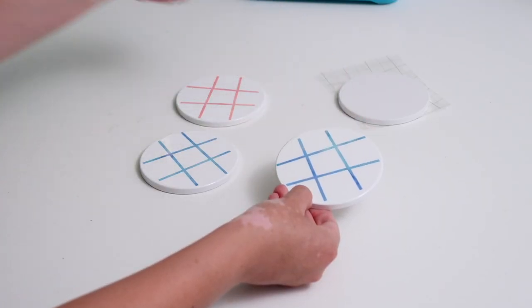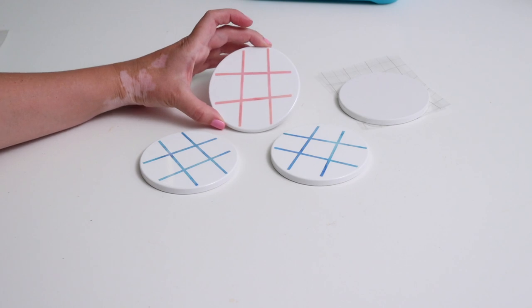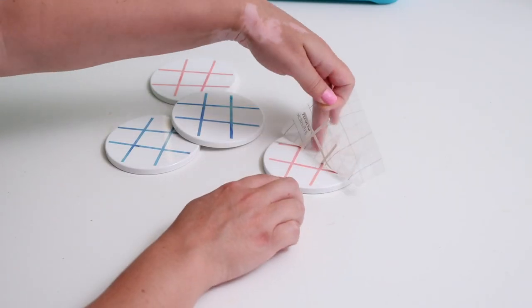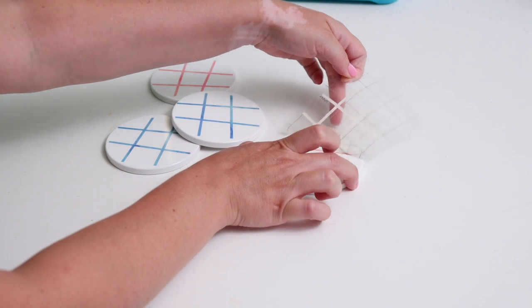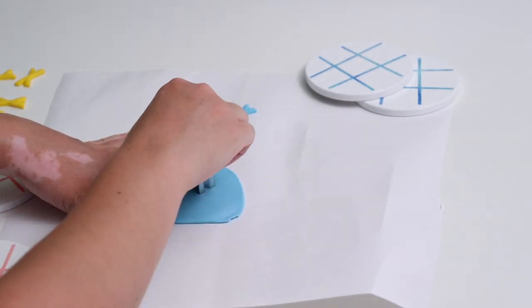And look at how vibrant that is! This is part of the coaster now. It's waterproof, it will not come off at all, it is one with the coaster. It is so amazing. I love how these colors turned out and I think these coasters look really awesome on their own, like without being a tic-tac-toe board. That's why I kind of did that.